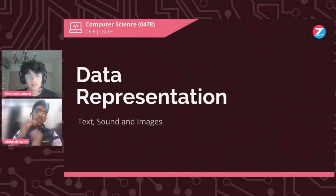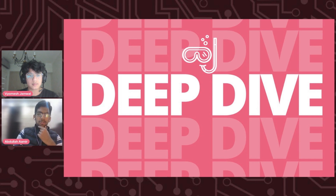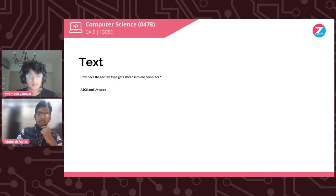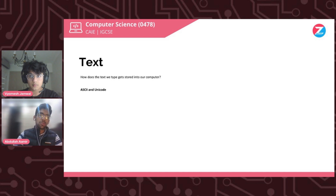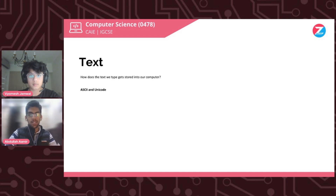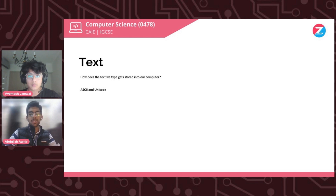The topic we'll be talking about today is text and images, with a presentation on screen. Let's deep dive straight into it. The first part is about text — how does text get stored in a computer? The computer uses binary, and in between the binary and the text we have a method of conversion: ASCII and Unicode.